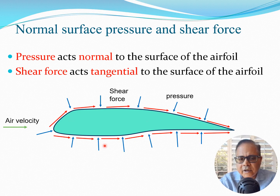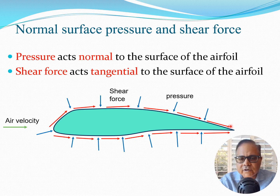Looking at an airfoil section again, there is a pressure and a shear force. The pressure acts normal to the surface of the airfoil — if we take the perpendicular to any point on the surface, we get the pressure in that direction. All these lines of pressure, shown in blue, are essentially acting normal or perpendicular to the surface. The second type of force is the tangential component — these tangential forces are all known as the shear force.